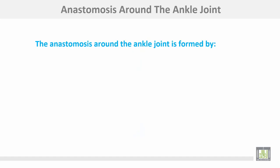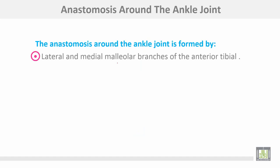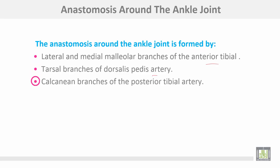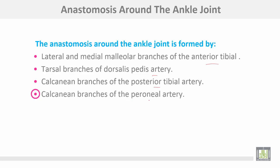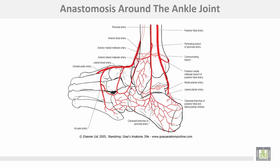The anastomosis around the ankle joint is formed by the lateral and medial malleolar branches of the anterior tibial artery, tarsal branches of the dorsalis pedis artery, calcanean branch of the posterior tibial artery, calcanean branches of the peroneal artery, and the perforating branch of the peroneal artery. Arteries sharing in this anastomosis are the anterior tibial, dorsalis pedis, posterior tibial, and peroneal arteries.